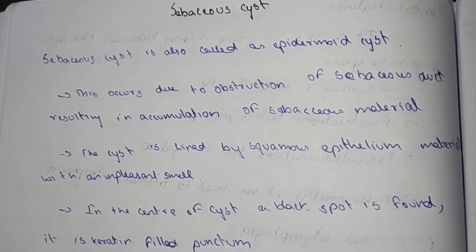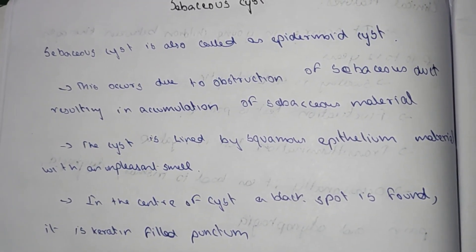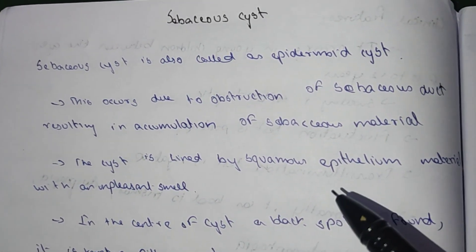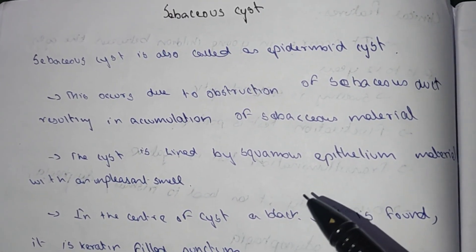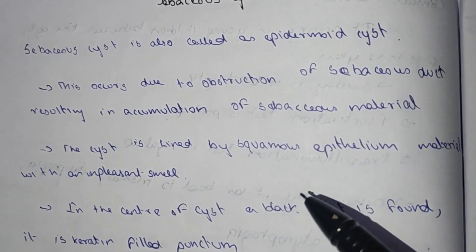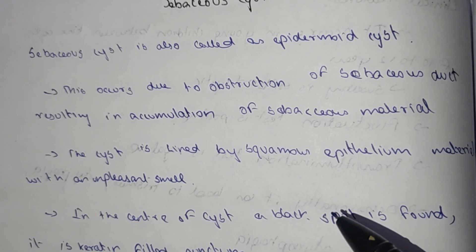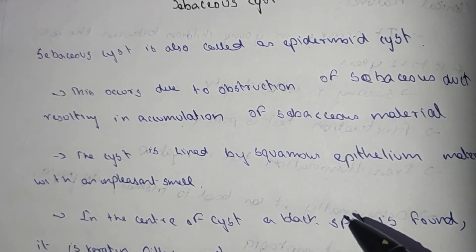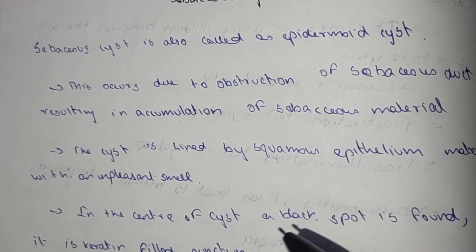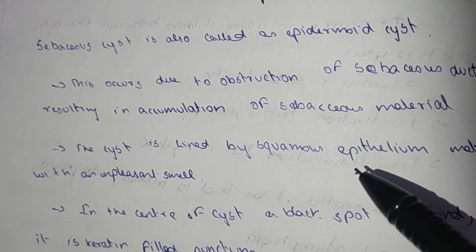This occurs due to obstruction of the sebaceous duct, resulting in accumulation of sebaceous material. The sebaceous duct is obstructed and the sebaceous material accumulates as the duct is blocked.